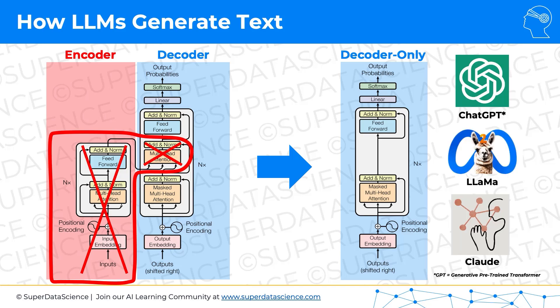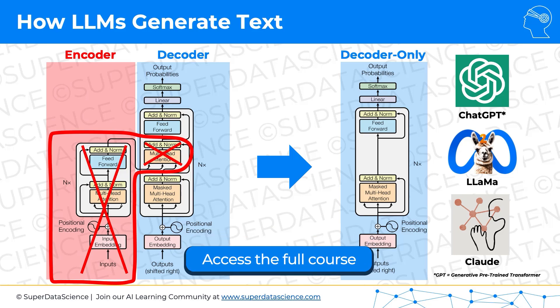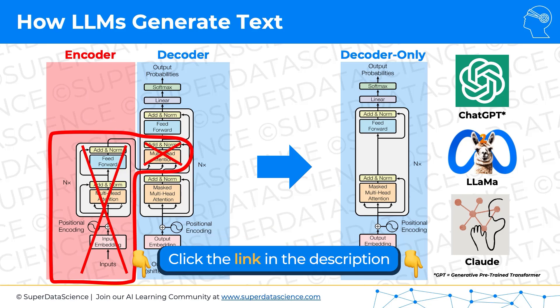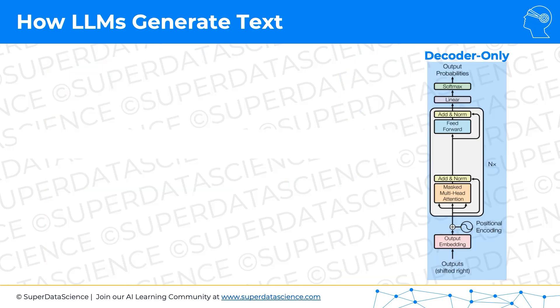When we talk about large language models, whether it's ChatGPT, Llama, Claude, Anthropic, and other large language models, they all use a decoder-only architecture, which you can see here on the screen. Very important to keep that in mind, and that's what we're going to be analyzing in this tutorial.